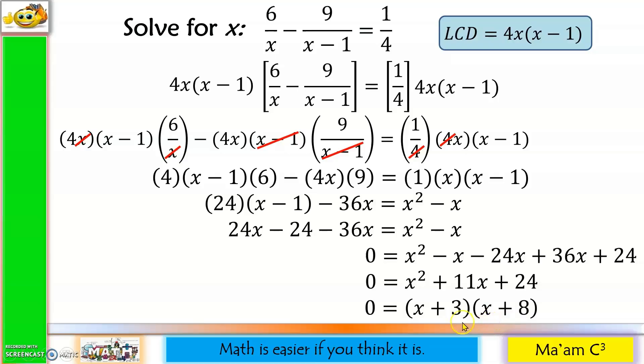Quick check on the factors. 3 plus 8 is 11, that should be the middle term. And 3 times 8 is 24, that should be the third term. So the factors are correct. Finally, you equate each factor to 0. So x plus 3 equals 0, x equals negative 3. I'll have it x sub 1 because I have two x's here. And then x plus 8 equals 0, that would be x equals negative 8. For the checking, you just have to substitute each value to the original equation and find out if two sides will be equal.